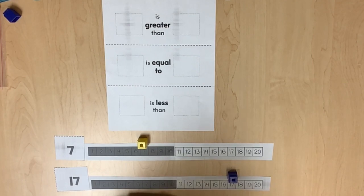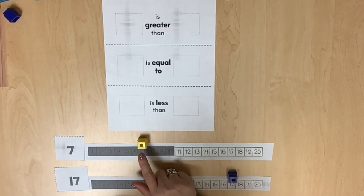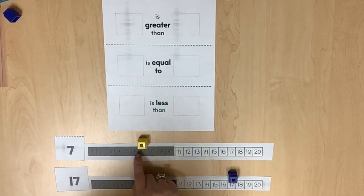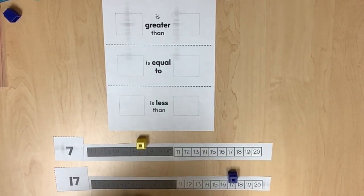As students understand how each space is counted on the number path, quantities can be represented with one linking cube. Count each space on the number path to confirm each quantity before comparisons are made.